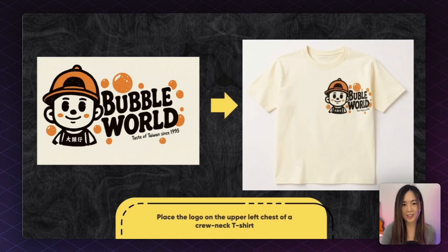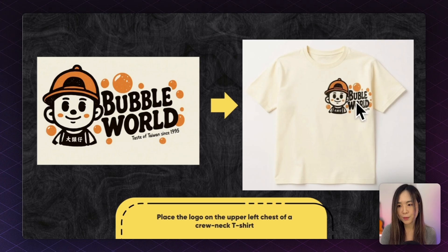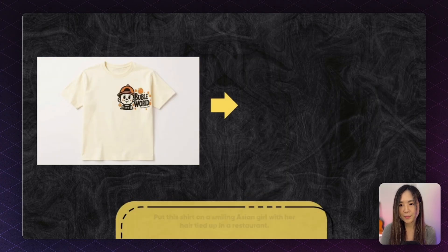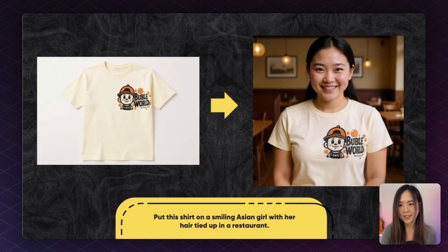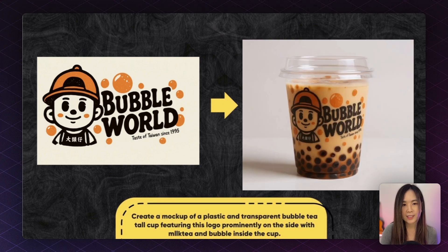The result is nearly perfect — though I noticed a small misspelling. But with a complex logo containing Chinese text and small tags, it almost preserved it perfectly except for the spelling. I then put it on a model in a restaurant setting, giving you professional imagery for your company website or hiring pages showing happy employees in branded clothing, without forcing anyone. You can create mockups on virtually anything — like a cup, which this time spelled the text correctly and followed my instruction of putting milk tea and bubbles inside.